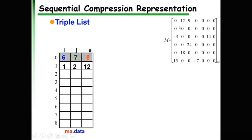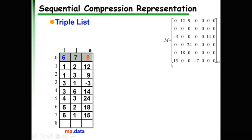Let's fill in the triple list table together. The first non-zero is 12 at row 1, column 2. Next: row 1, column 3, value 9. Then −3 at row 3, column 1. Row 3 also has value 14. Then 18, then 15, and finally the last non-zero at row 6, column 4, value −7. This is the triple list compression for the sparse matrix, with row indices in ascending order and column indices in ascending order within each row.